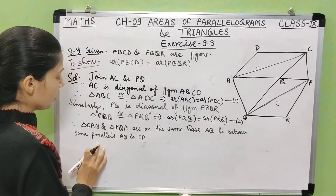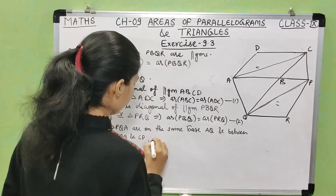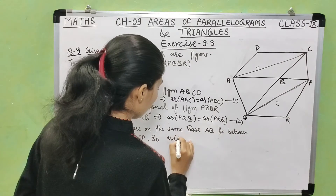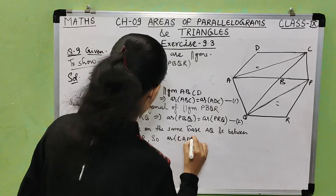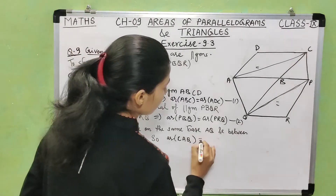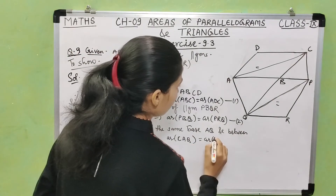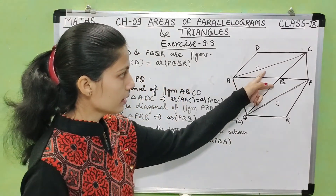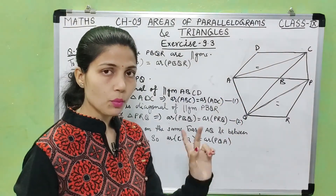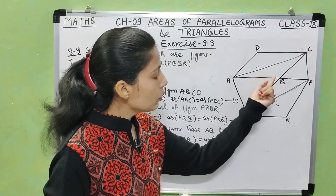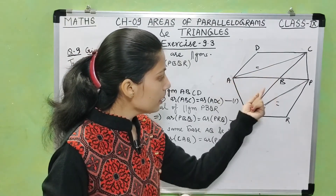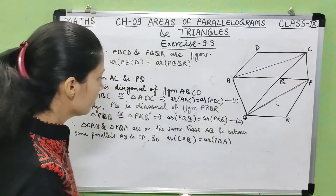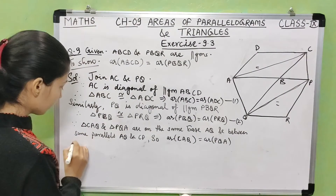Similarly, PQ is the diagonal of parallelogram PBQR, so triangle PBQ is congruent to triangle PRQ. Since triangle CAQ and triangle PQA are on the same base AQ and between the same parallels AQ and CP, area of triangle CAQ equals area of triangle PQA — equation 3.